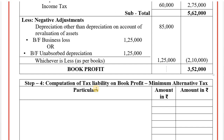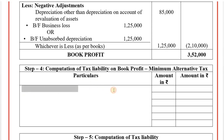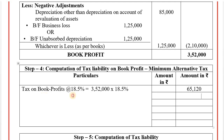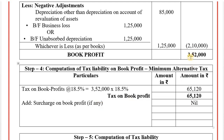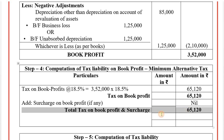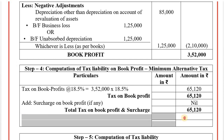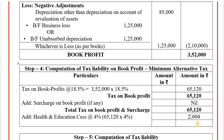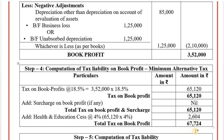Step number four: Tax on book profit — Minimum Alternate Tax. Book profit Rs. 3,52,000 at rate of 18.5% = Rs. 65,120. Surcharge: nil (book profit below Rs. 1 crore). Health and education cess at 4% = Rs. 2,604. Total tax on book profit: Rs. 67,724.